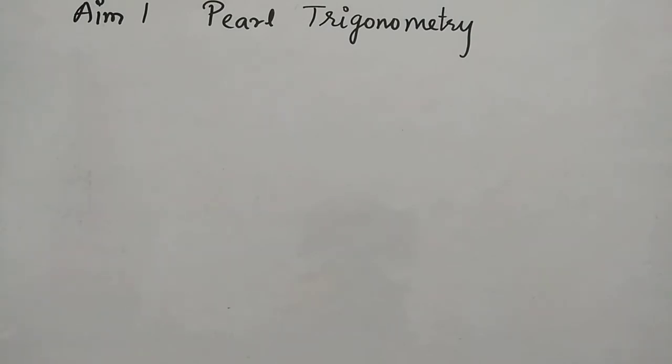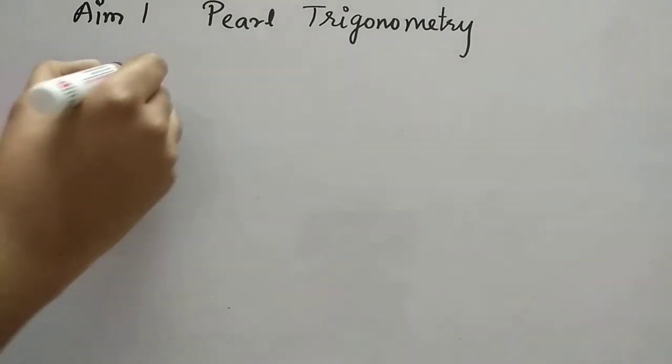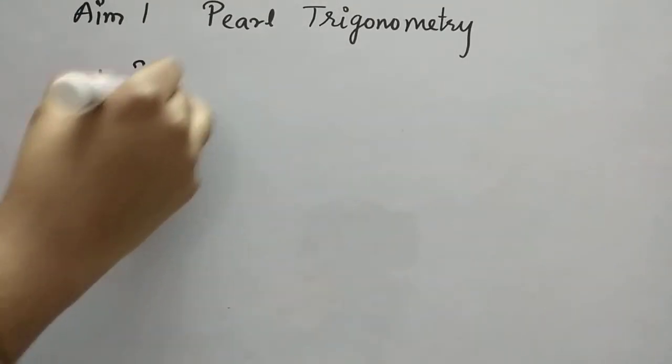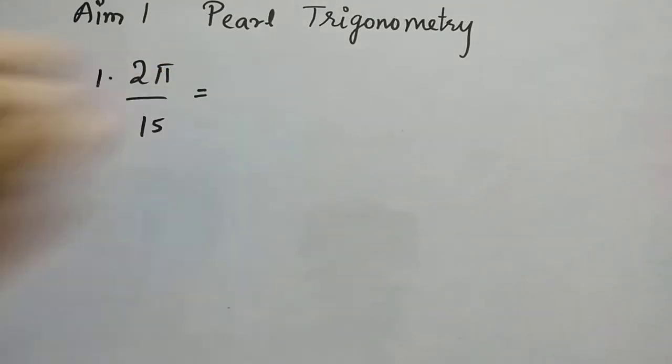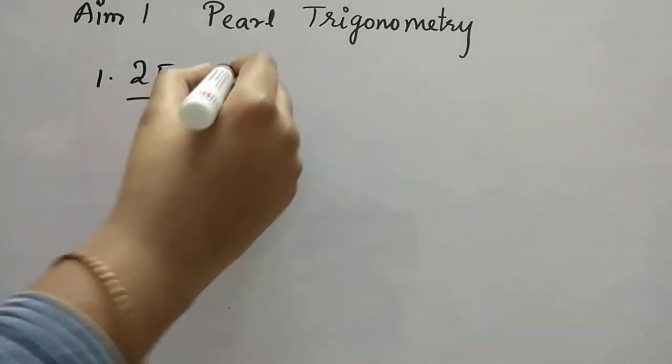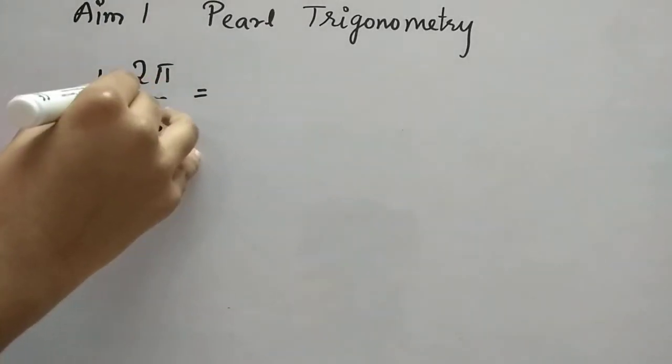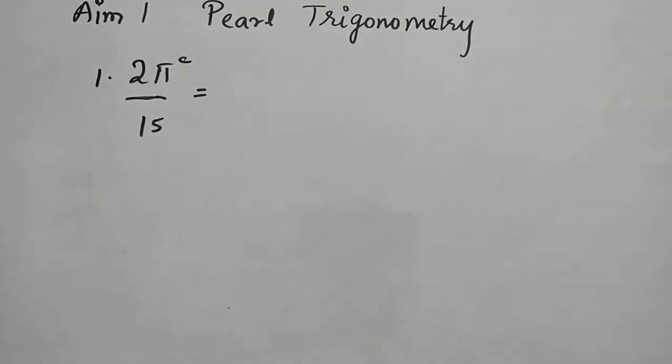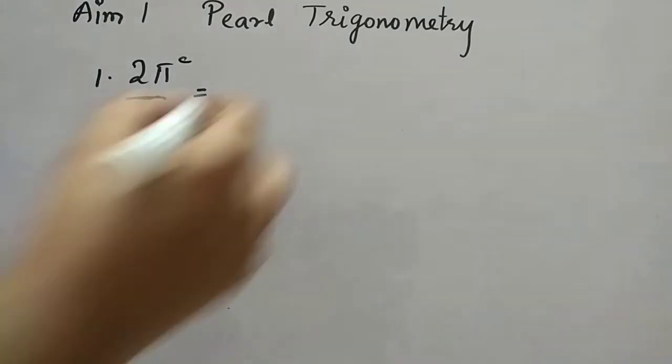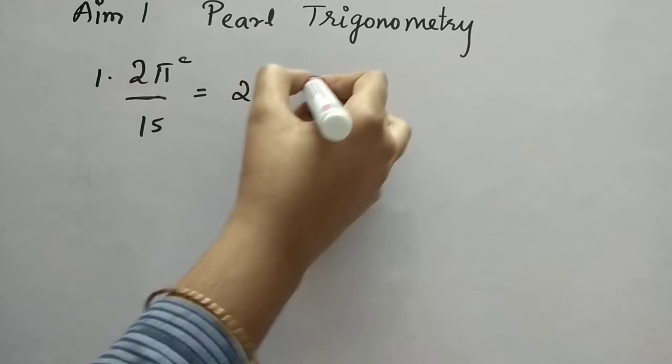So first question is 2 pi by 15. When you solve it, this pi is there, so we have to convert this to degrees. So the answer is 24 degrees, option A.